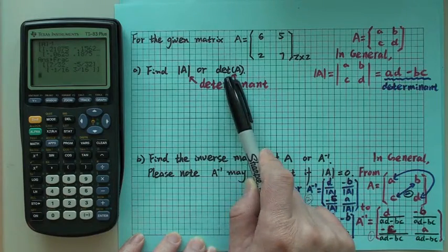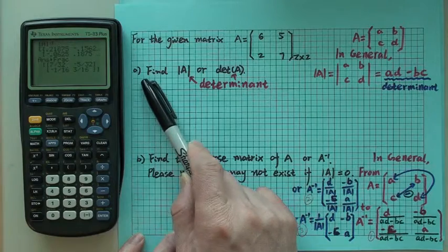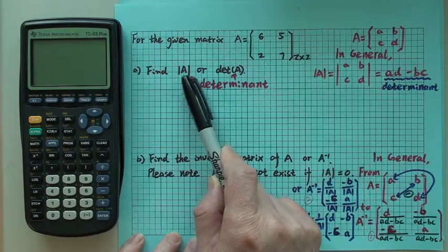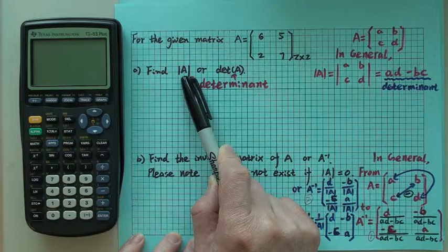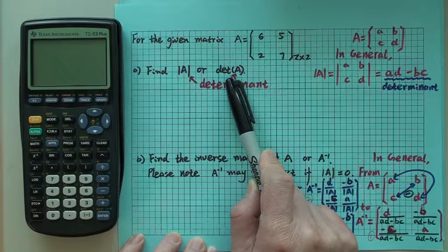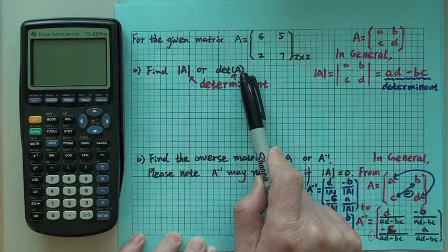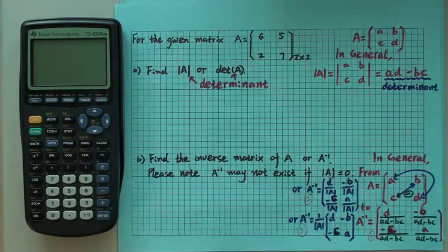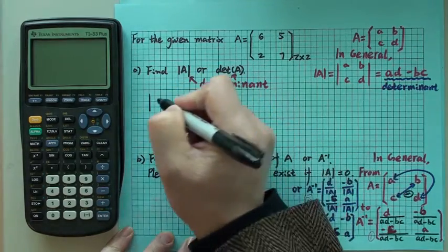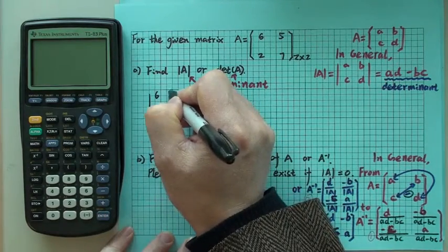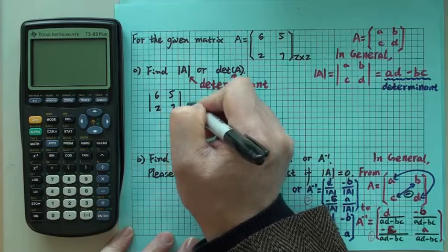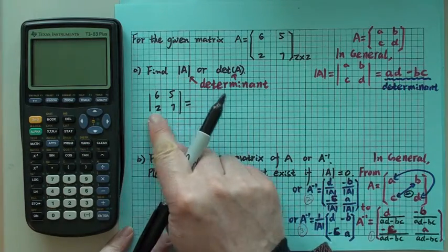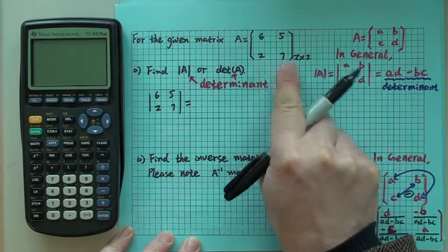We want to do two things here. First, find the determinant, which can be written in two ways: two vertical lines with A in the middle, or det(A) with brackets. The first notation is like this: 6, 5, 2, 7. When we try to find the determinant, we use vertical lines. For matrix, we use square brackets.